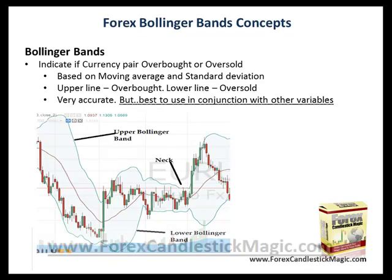Bollinger Bands indicate if the currency pair is overbought or oversold. So this is more like an oscillator kind of indicator which basically tells if the market is in an overbought situation or in an oversold situation. It is based on a moving average and a standard deviation.